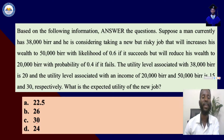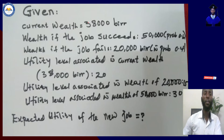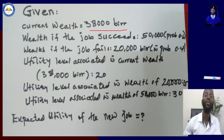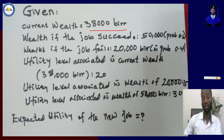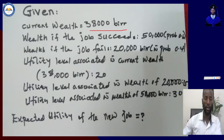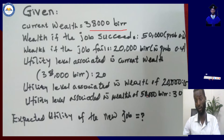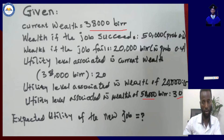Let's analyze this problem. The given parameters are: current wealth is 38,000; wealth if the job succeeds is 50,000 with probability 0.6; wealth if the job fails is 20,000 with probability 0.4. The utility level associated with current wealth of 38,000 is 20, with 20,000 is 15, and with 50,000 is 30. We are asked to calculate the expected utility of this new job.